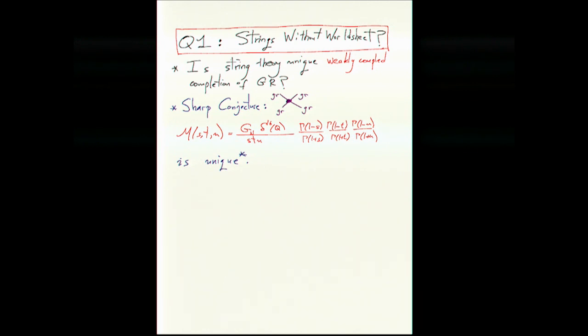And in fact, there's a more general question, which is, can we actually prove that, and it's a sharply posed mathematical problem. Can we actually prove that string theory is the unique, weakly coupled, the UV completion of gravity?